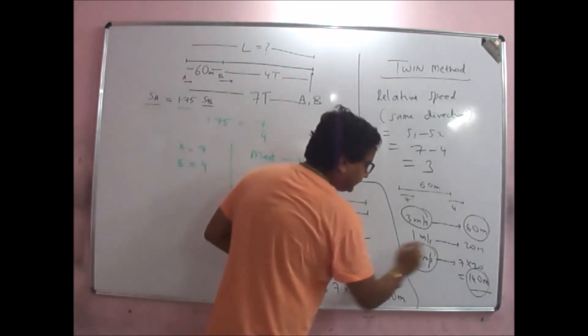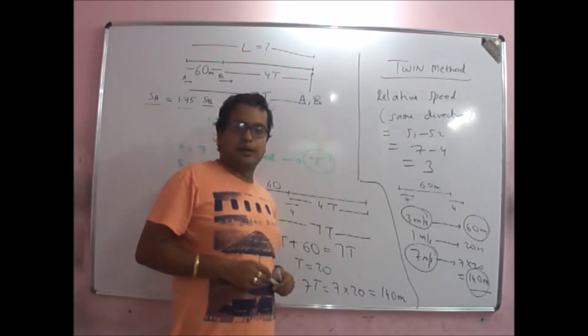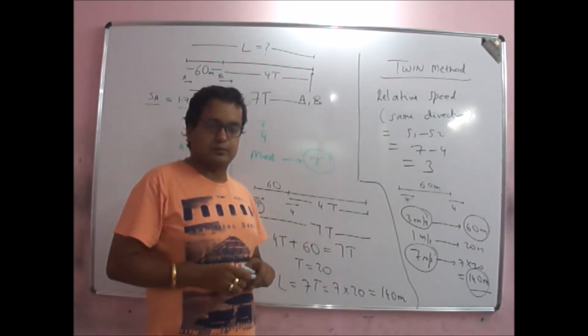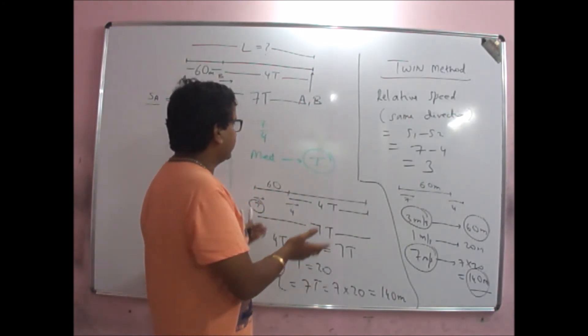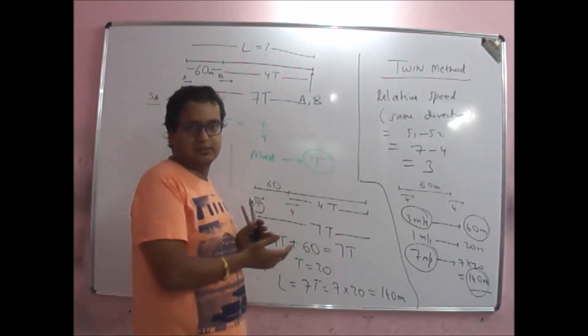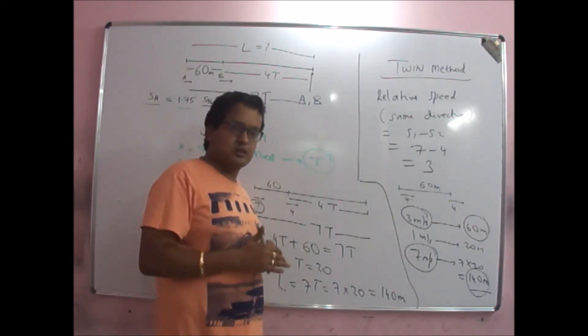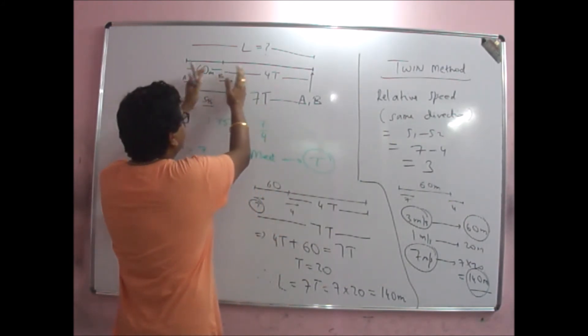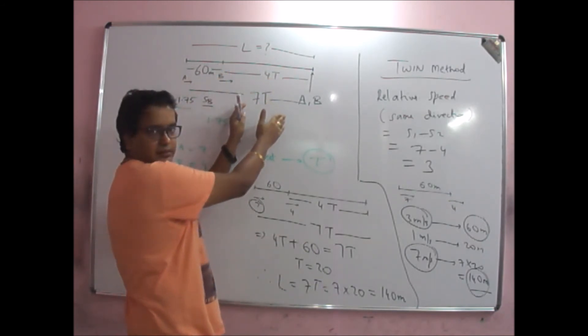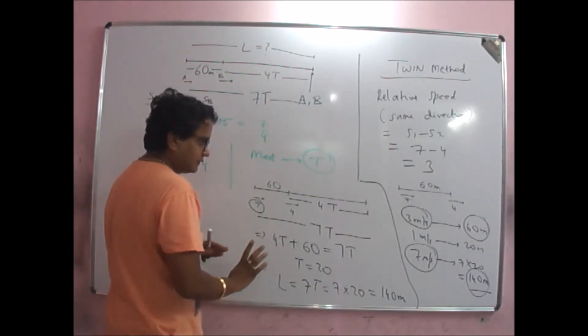So here, the length is 140 meters. So the same question can be solved using two different approaches. In the first one, we used 60 plus 4t is equal to 7t and we got t, then got L.